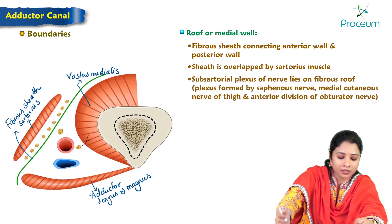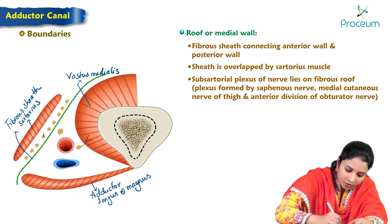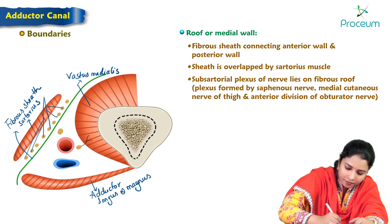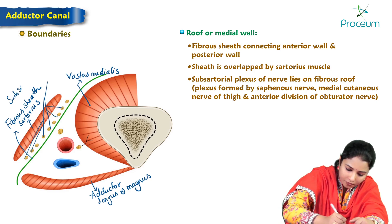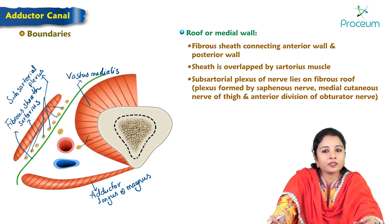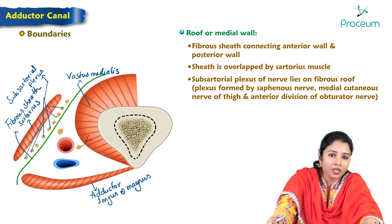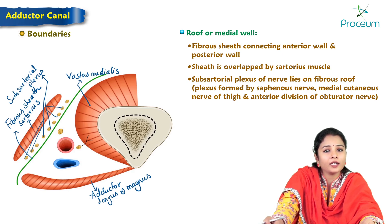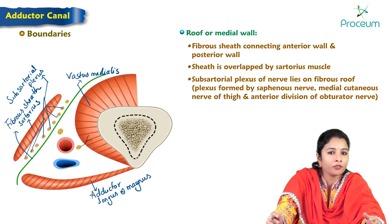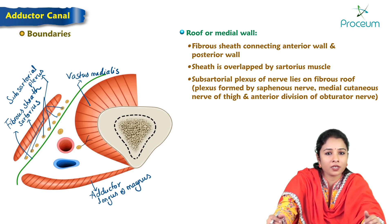The subsartorial plexus consists of several thin nerves. It is formed by the saphenous nerve, the medial cutaneous nerve of the thigh, and the anterior division of the obturator nerve — these three nerves together form the plexus called the subsartorial plexus.